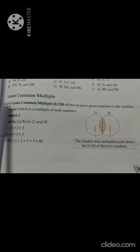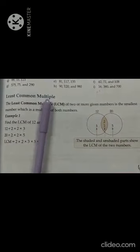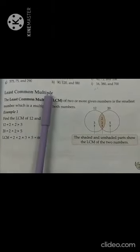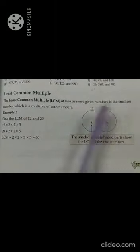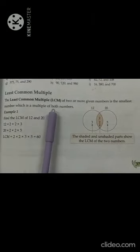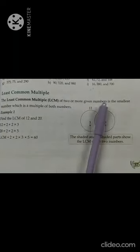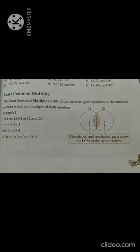LCM is nothing but Least Common Multiple. You have already learned about HCF, that is Highest Common Factor. Now we can learn about Least Common Multiple. The LCM of 2 or more given numbers is the smallest number which is the multiple of both those numbers.